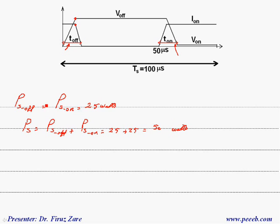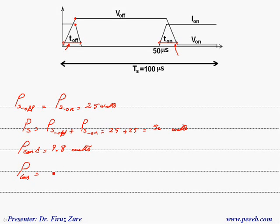Finally, the total switching loss, which is the switching loss for the off-state plus the switching loss for the on-state, is 25 plus 25 equals 50 watts. The conduction loss was 9.8 watts, so the total loss for the switch in this case is 59.8 watts.